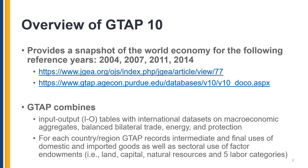In essence, the GTAP database combines input-output tables with international data sets on economic aggregates such as GDP and GDP expenditures, with balanced bilateral trade of products and services, with energy data and protection data such as import tariffs.